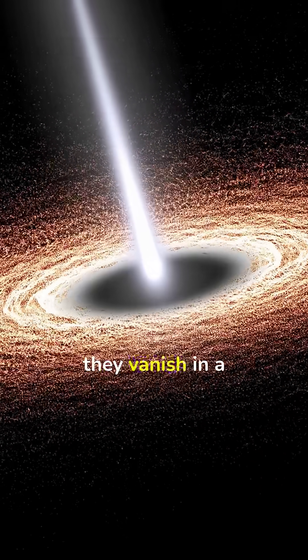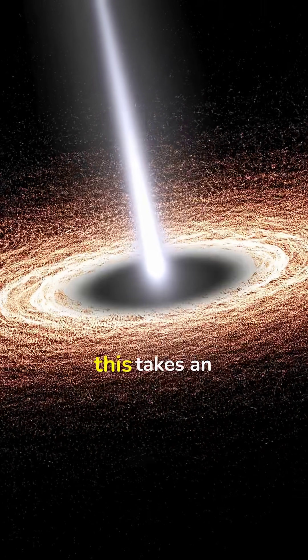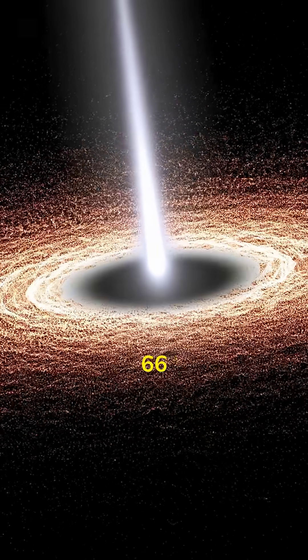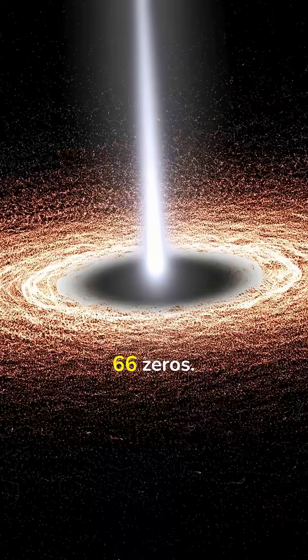Until one day, they vanish in a final flash. For a stellar mass black hole, this takes an unbelievable amount of time. 10 to the 66 years. That's a 1 followed by 66 zeros.